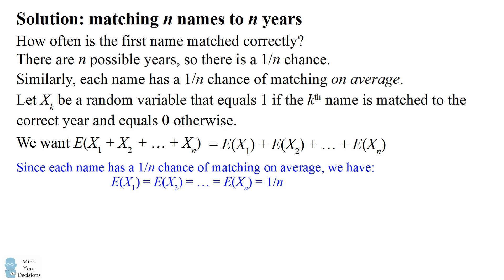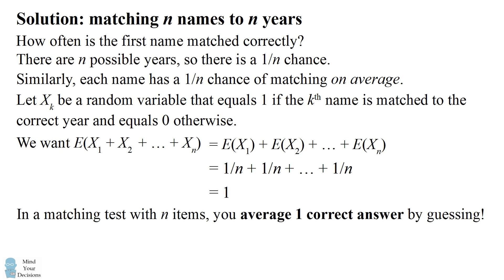Each name has a 1 over n chance of matching on average. So we can substitute in 1 over n for each of these variables. We now have n terms that are 1 over n. So it'll be an average of 1 and that's our correct answer. In a matching test with n items, you average one correct answer by guessing.